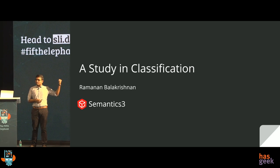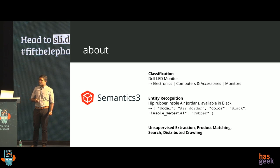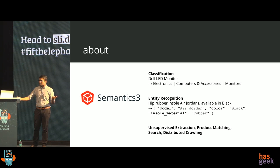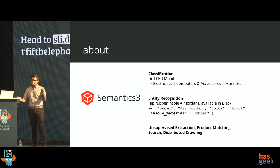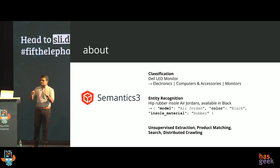For those of you who get the reference, a study in classification. The company I work at is a small startup called Semantics 3. We help e-commerce businesses all over the world, and we do a number of data and AI solutions for them. Some of the common tasks include classification and entity recognition. We also have expertise in unsupervised extraction, product matching, search, and large-scale distributed crawling.